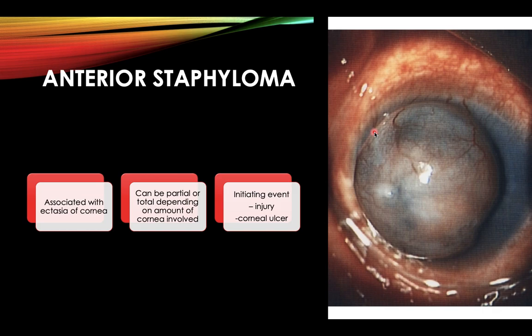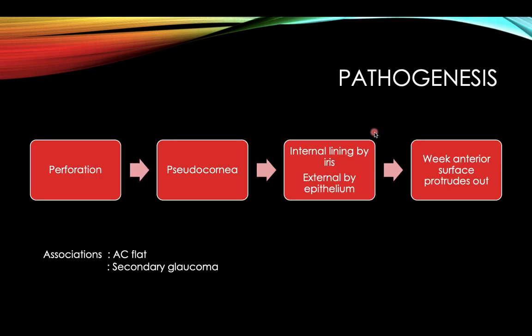Anterior staphyloma is associated with ectasia of the cornea and can be partial or total depending on the amount of cornea involved. The initiating event can be an injury or a corneal ulcer leading to perforation. Once perforation occurs, a pseudo-cornea forms, made up of exudates and fibrous tissue, with an internal lining by iris and externally by new epithelium.